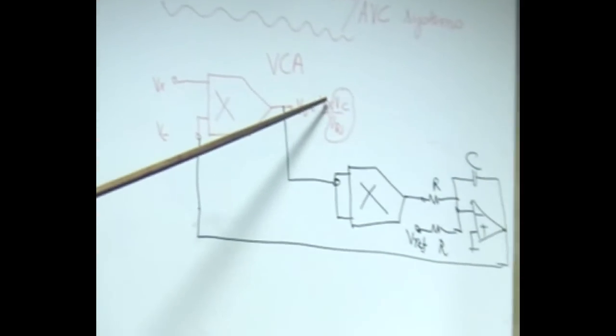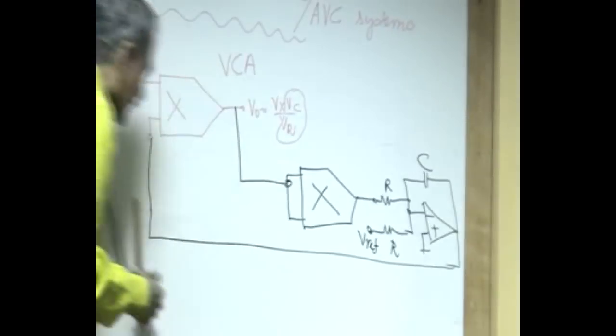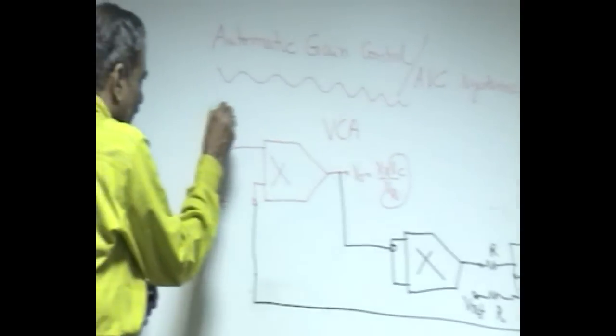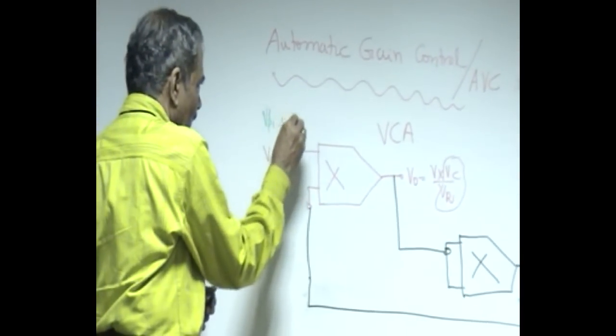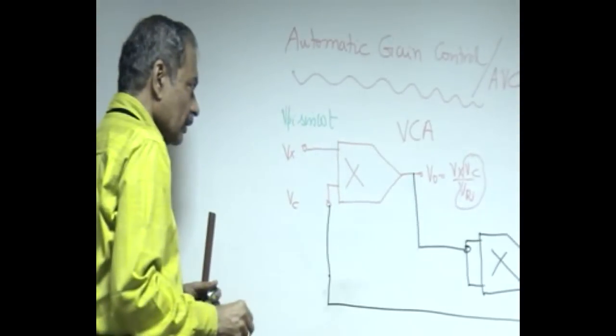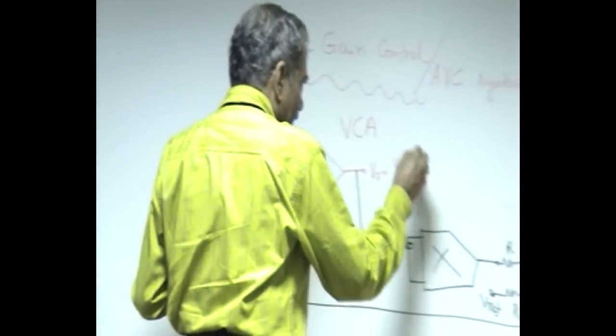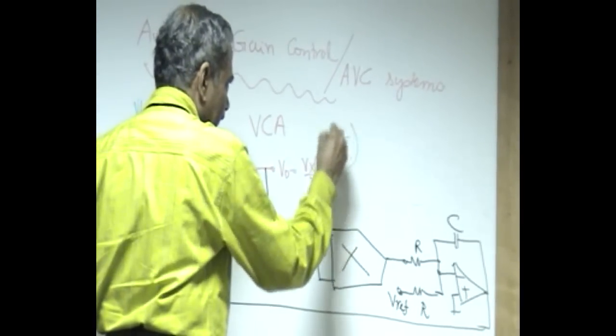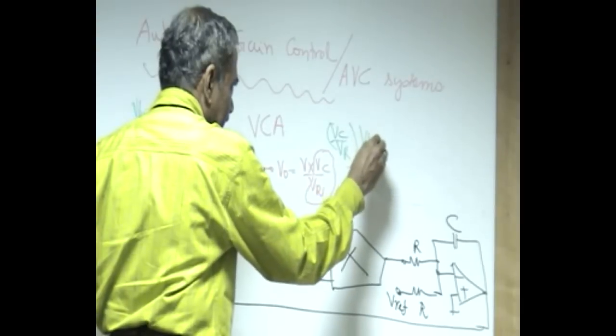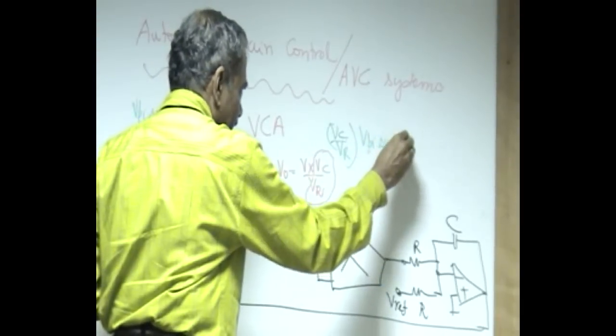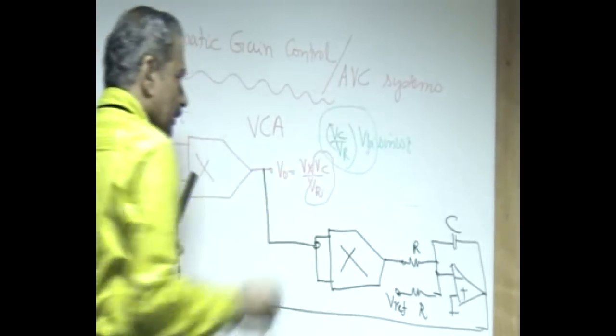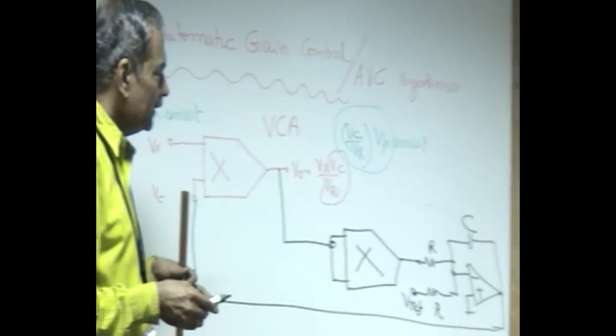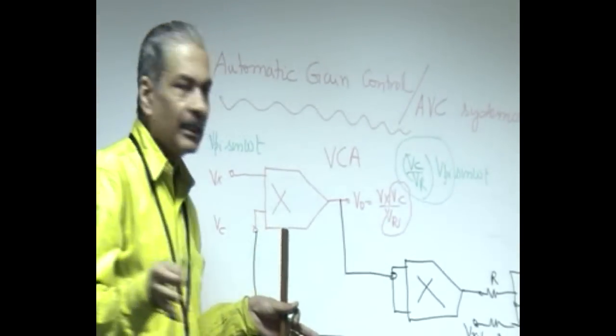You can see that V_x is the input, and we are assuming that the input is a sinusoid, let's say V_pi sin(ωt). This becomes equal to V_c divided by V_r into V_pi sin(ωt). Now, we want the peak amplitude of the output, V_c times V_pi by V_r, to remain constant.